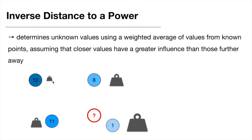These weights become smaller as a function of distance to our unknown point, hence the name inverse distance. So our closest point will have a great influence on the value assigned to our unknown point, while a point further away gets a smaller weight, and a point even further gets an even smaller one — until a very distant point barely influences the value at all.